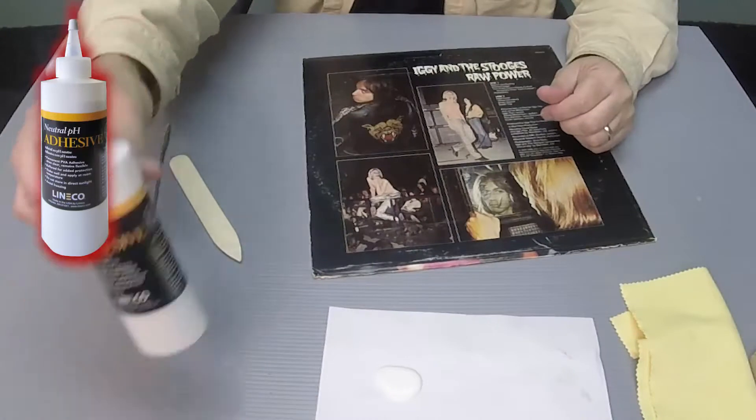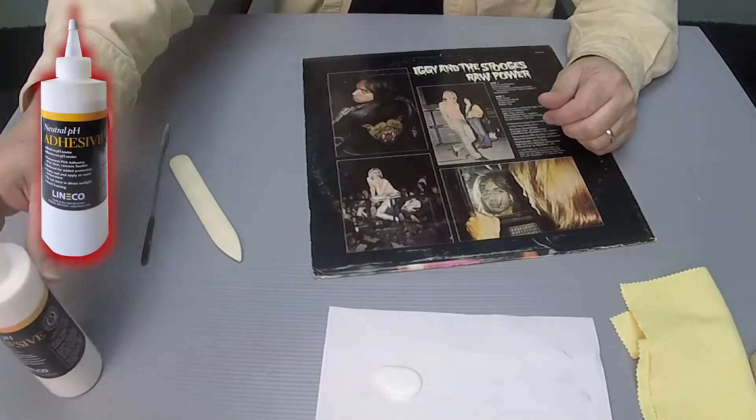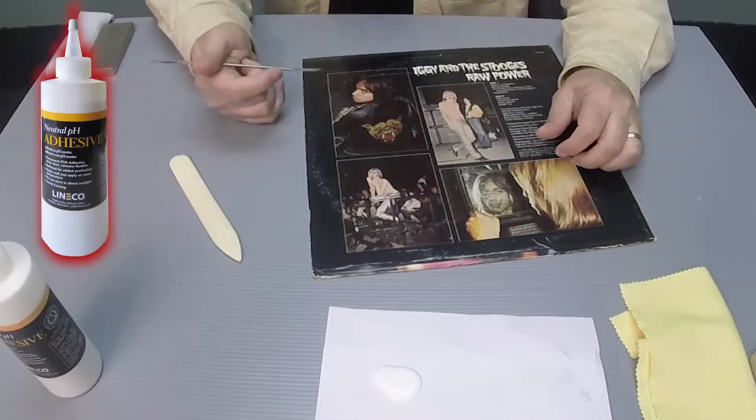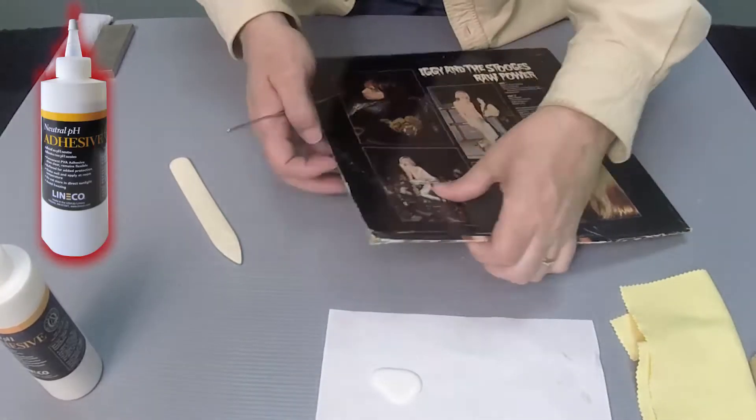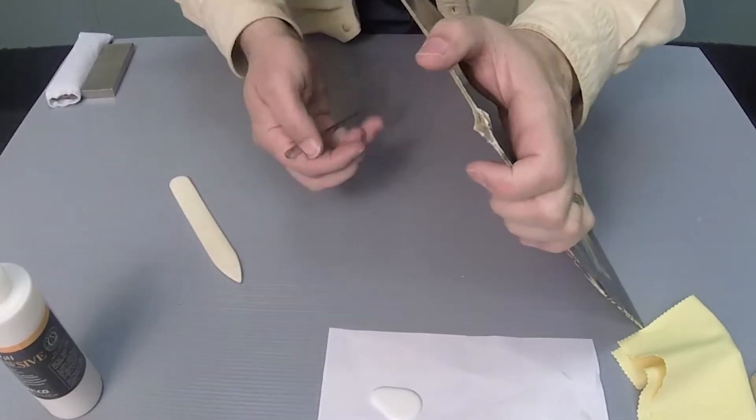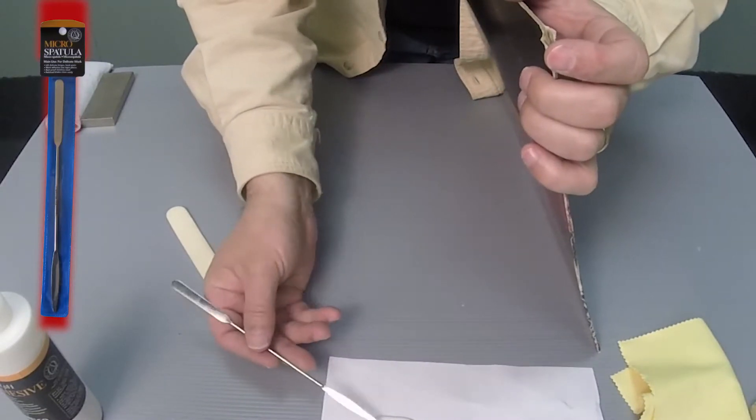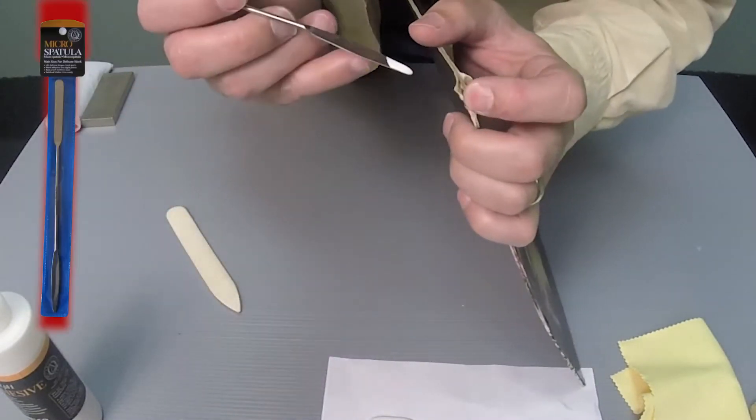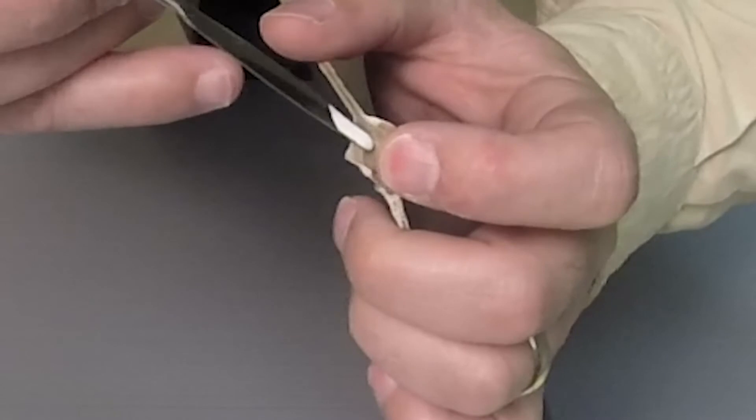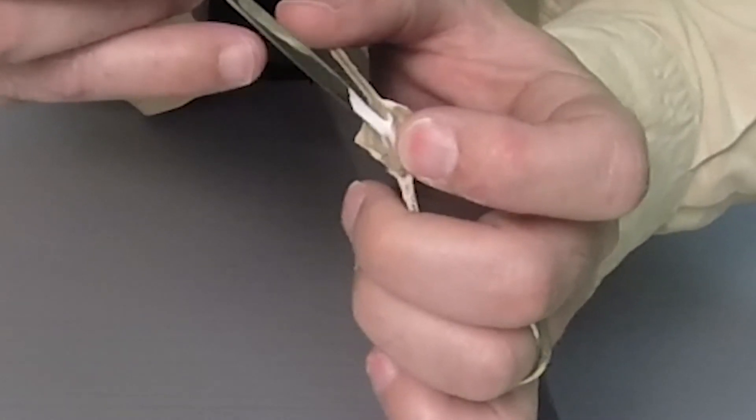I am going to repair the corner using our BU acid-free adhesive and apply it with a micro spatula. You need to be patient and apply very little glue between each layer of cardboard. Don't let the glue build up or pool between the layers.